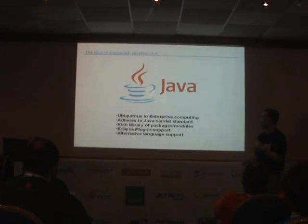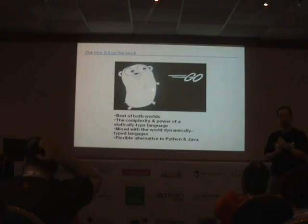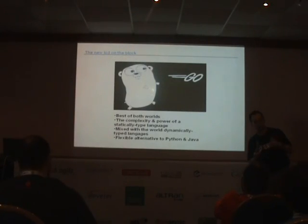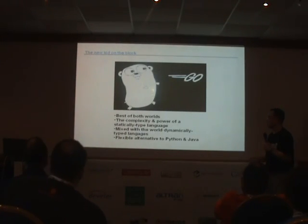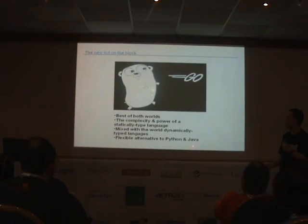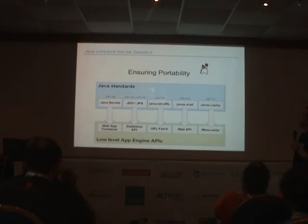Go is new — it's sort of like a combination of Python and Java. It gives you the statically typed language that people want, but with a simpler syntax approaching Python. So it's got the complexity and power of a statically typed language but the ease of use of a dynamically typed language. It's a flexible alternative, and App Engine is a good place to try things.